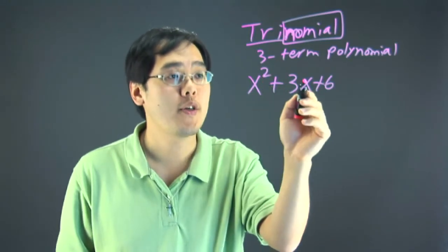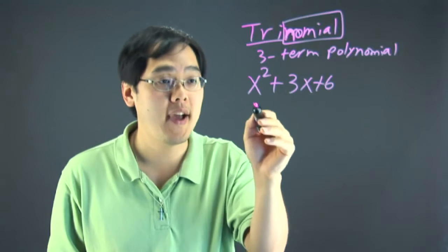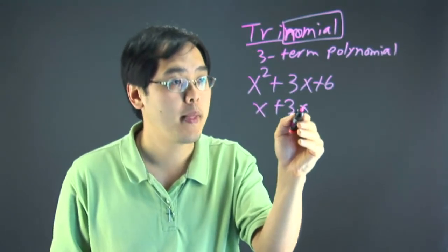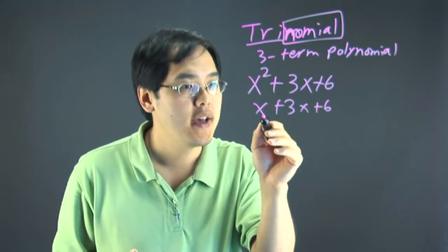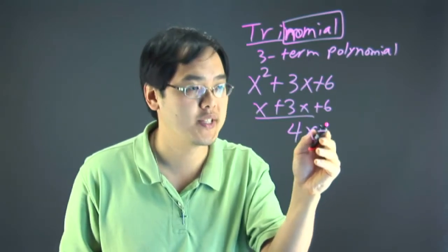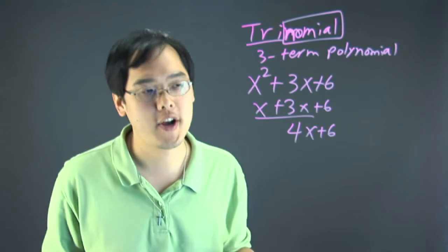Notice this x squared, 3x and plus 6. Now, if I have x plus 3x plus 6, I'm not really sure I can call this a trinomial because x and 3x are really like terms. So, you have 4x plus 6. That's not really considered a trinomial.